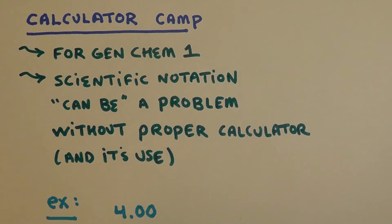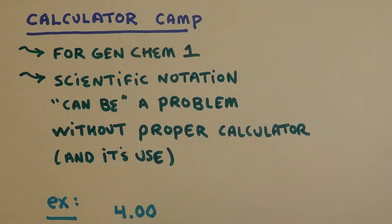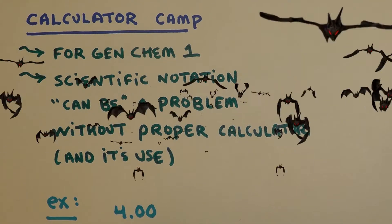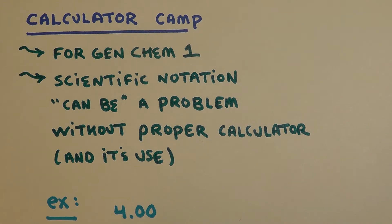Attention, everybody. Hi, everybody. Hi, Mike here. Sorry, I got a little carried away with the whole military thing. That's because what we're doing today is calculator camp for Gen Chem 1. In my 25 years of teaching chemistry, particularly general chemistry, there's a lot of calculations. Many of my students encounter unnecessary problems because they don't have a scientific calculator or they don't know how to use their scientific calculator properly. So I'm going to go through, for Gen Chem 1, the biggest problem, which is the use of exponential or scientific notation.